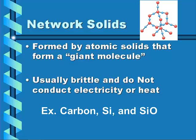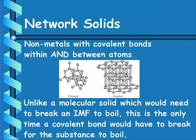Some examples of network solids are carbon, silicon, and silicon dioxide. In the network solid, we have nonmetals with covalent bonds within and between atoms, so network solids are very difficult to undergo phase changes. Unlike a molecular solid, which only needs to break an intermolecular force to boil, network solids must have a covalent bond broken in order for the substance to boil.